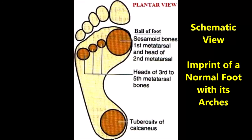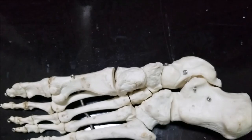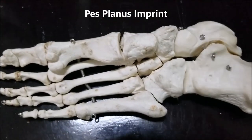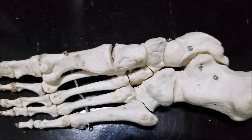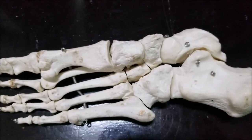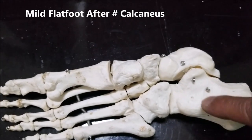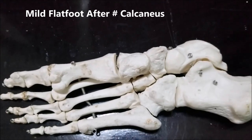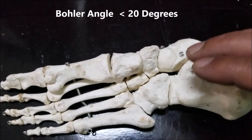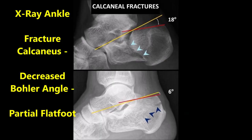A diagrammatic representation shows the imprint of a normal foot with its arches, versus the imprint of a person with flat foot or pes planus, where the whole foot touches the ground. With flat foot, a person cannot run and will have foot pain. If a person sustains a fracture of the calcaneus and it heals, they may develop a slight flat foot because the Böhler's angle becomes less than 20 degrees. These two X-rays of a fractured calcaneus show how the Böhler's angle has become reduced and resulted in partial flat foot.